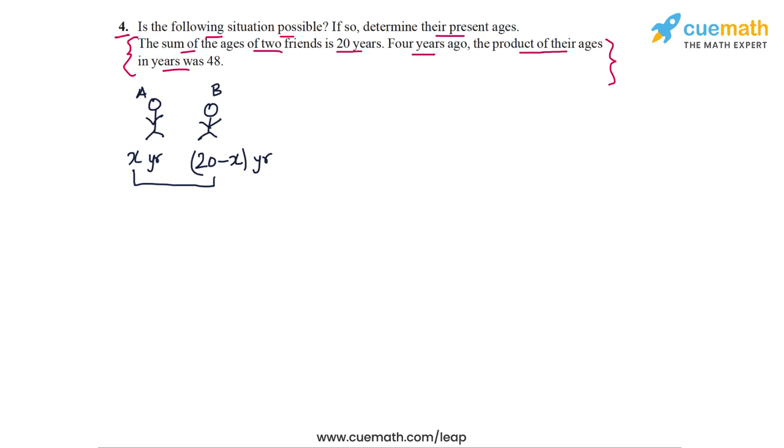Now, 4 years ago, a's age would be x minus 4 years. And b's age would be 20 minus x minus 4, so that's 16 minus x. So b's age would be 16 minus x years.